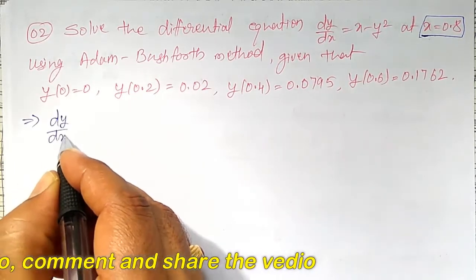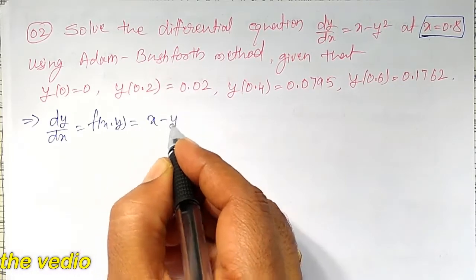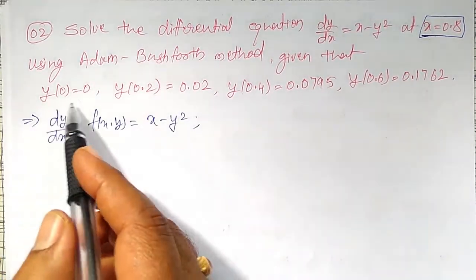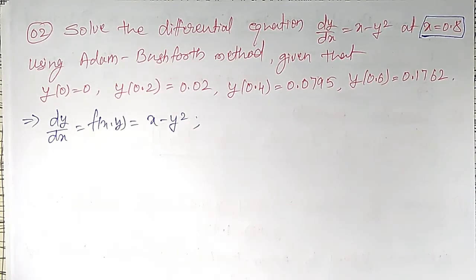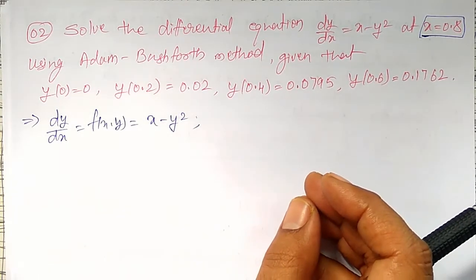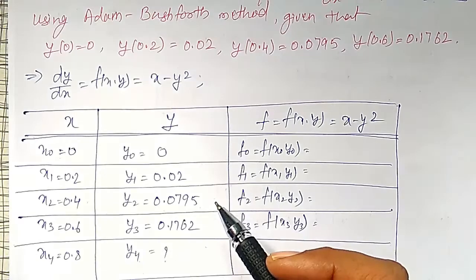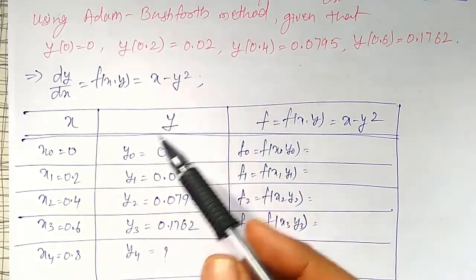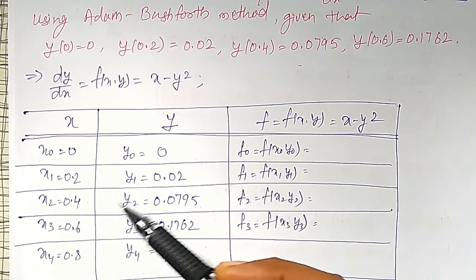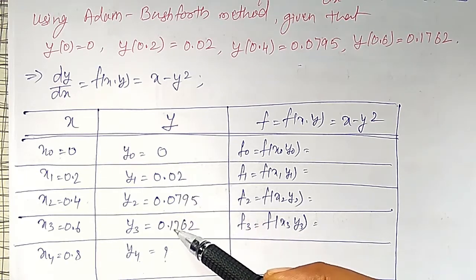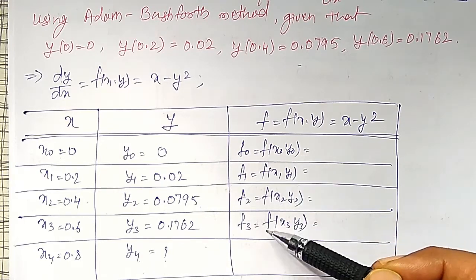My dy/dx is nothing but f(x,y) function, that is equal to x minus y². Then using these initial condition values, I will prepare the table to find out the functional values f0, f1, f2, f3. The initial conditions given: x0 is 0, x1 is 0.2, x2 is 0.4, x3 is 0.6, with corresponding y values also written. Now I have to calculate the corresponding f0, f1, f2, f3.